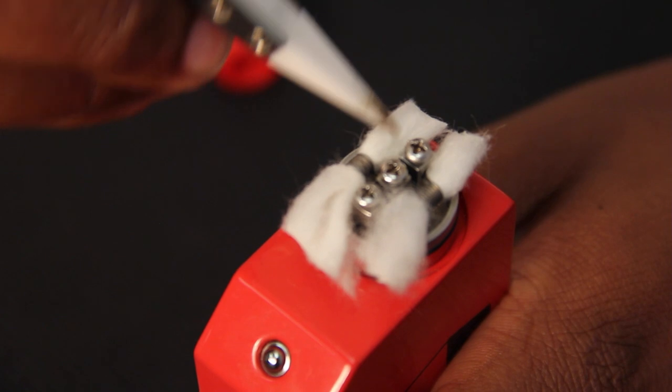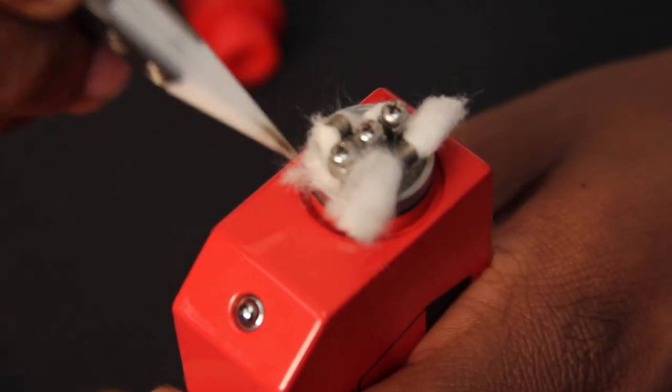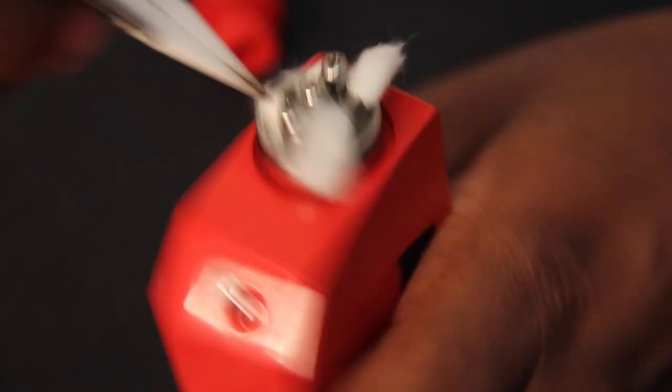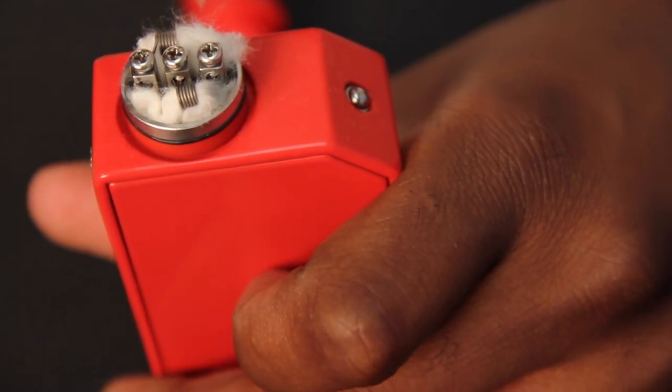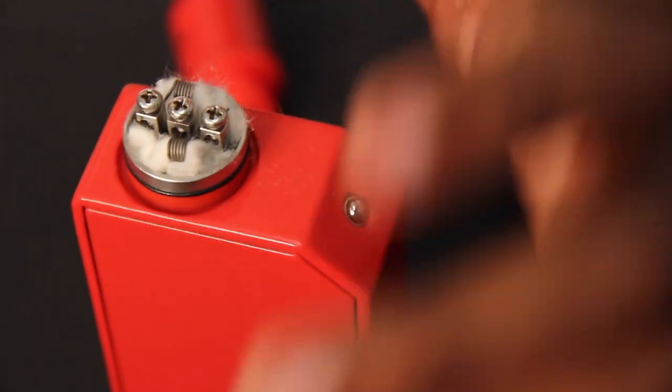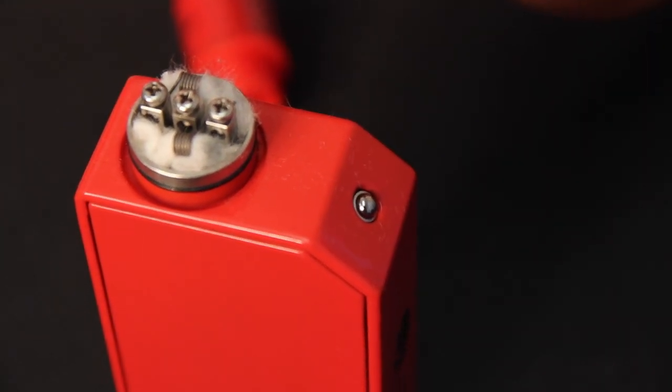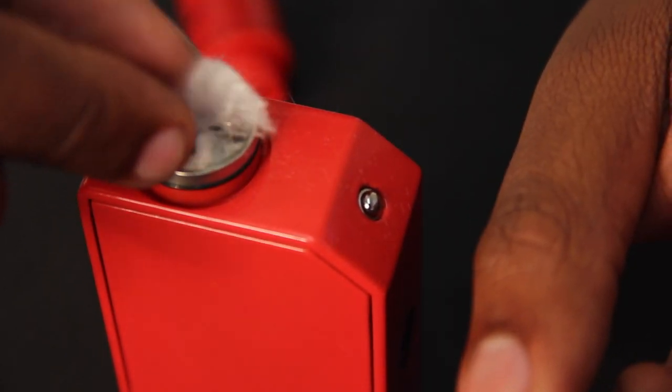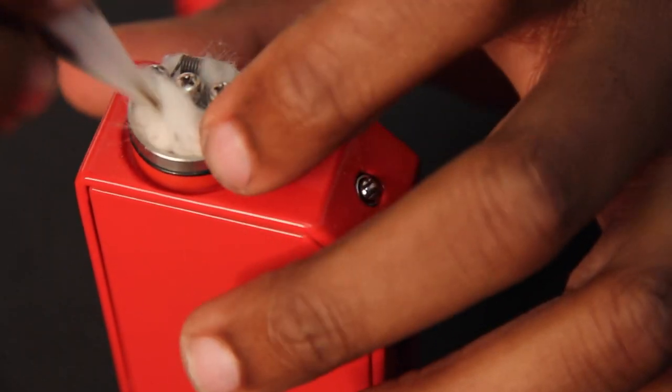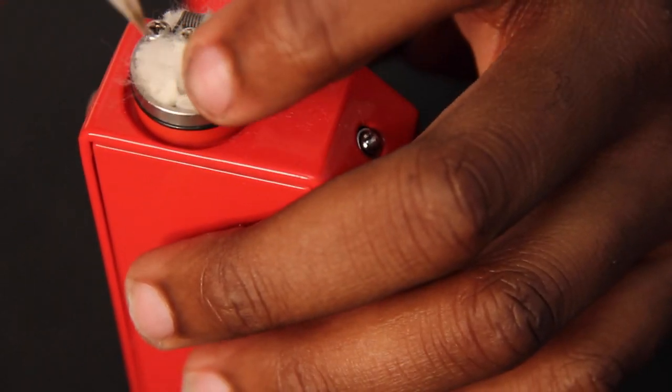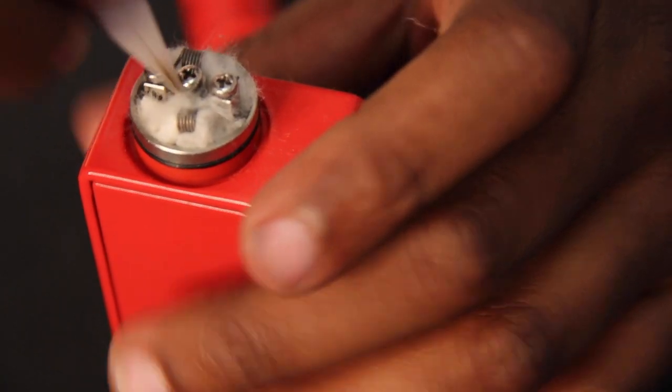Now what you want to do is we're not done yet, guys. We want to tuck our cotton into the juice well. This is going to help with the drips and for us to be able to drip a little bit more e-liquid into our addy. And then just for some fun measures, because I like to drip heavy, I add just a little bit more cotton in there so I can get a couple extra more drips versus my regular 10 drips.